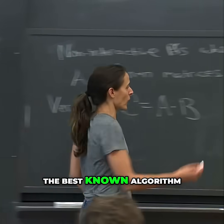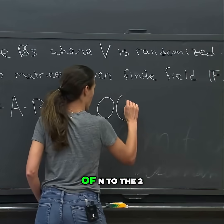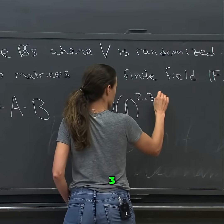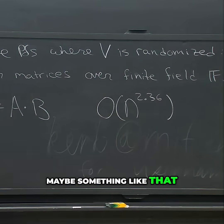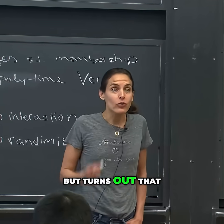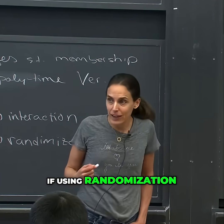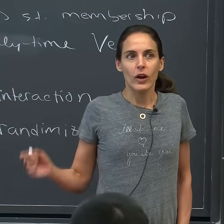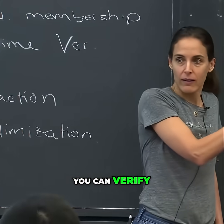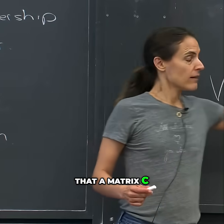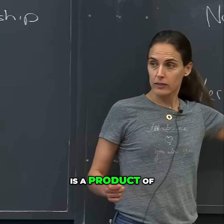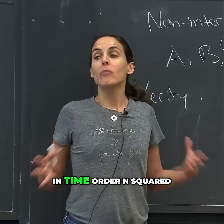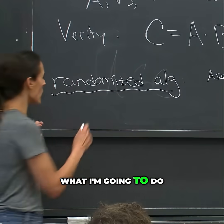In general, the best known algorithm is something like O(n^2.36), maybe something like that. It turns out that using randomization, you can do it more efficiently. Let's show how you can verify that a matrix C is a product of two matrices A and B in time O(n²).